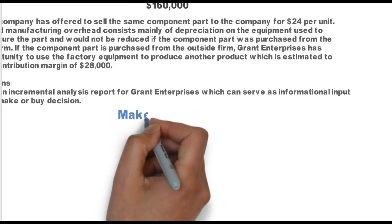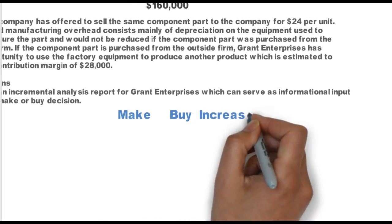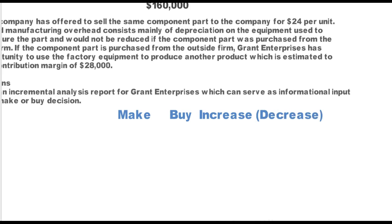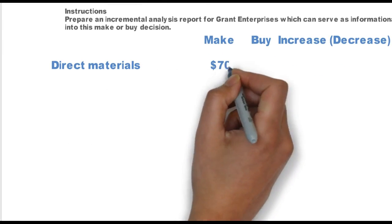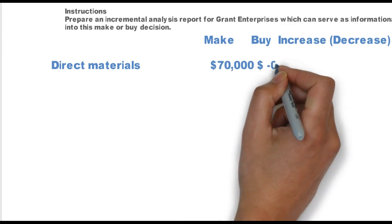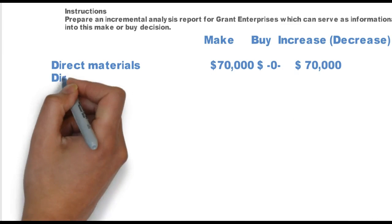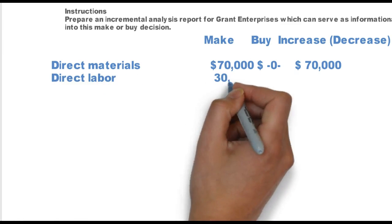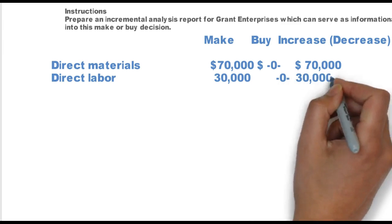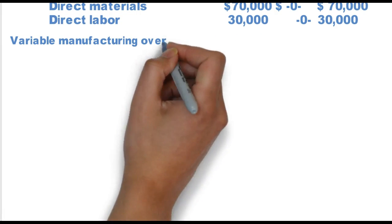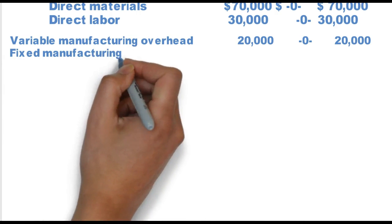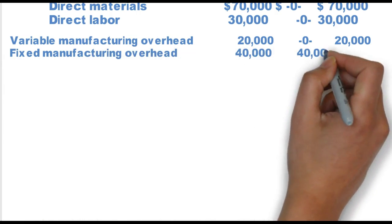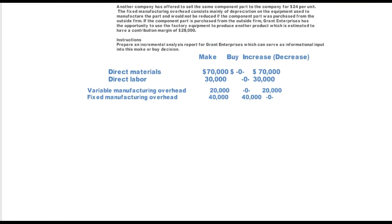Prepare an incremental analysis — Make, Buy, and the incremental increase or decrease between the two decisions. For direct materials: if manufacturing, I incur $70,000; but zero for the buy decision, so the difference is $70,000. Same with direct labor: zero for buy, the difference is $30,000. Variable manufacturing overhead follows the same logic — if I continue to manufacture, I will incur $20,000.